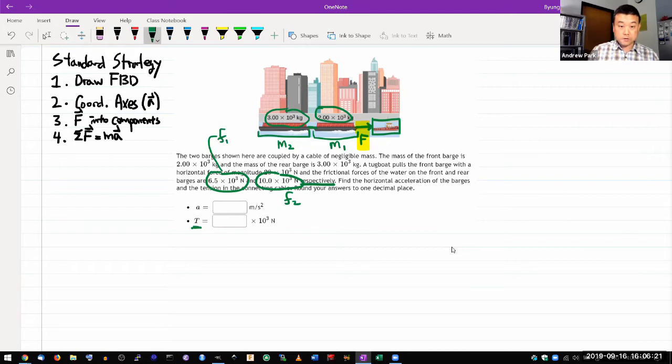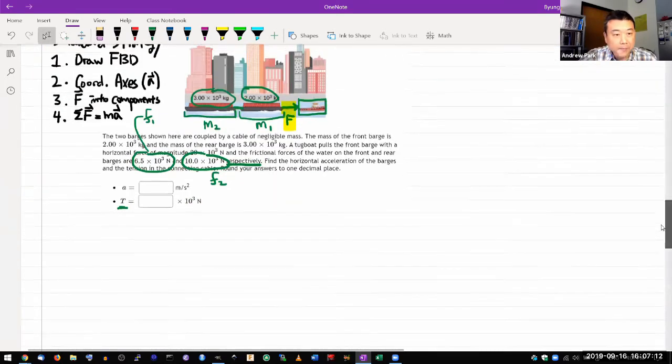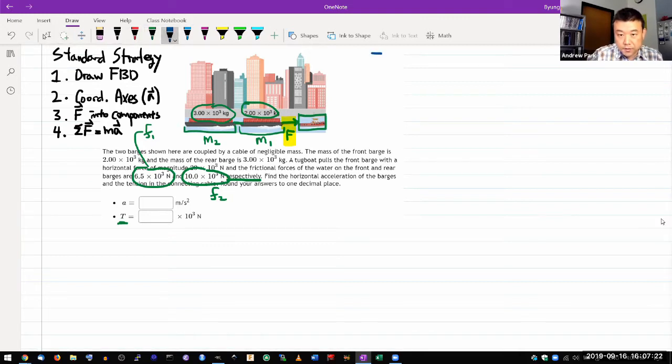All right, it says find the horizontal acceleration of the barges and the tension in the connecting cable. Good. All right, so I think we are ready to apply standard strategy. I wonder if I can save some space. There's that big white space that I'm pretty sure I don't need. We'll start by applying standard strategy. So the question already gave me a diagram. So I don't need to draw a new one. I just need to draw the free body diagram. So let me draw the free body diagrams. This time there are two diagrams because I have two objects in the system. This is the thing to remember about free body diagram. You draw one for each object.